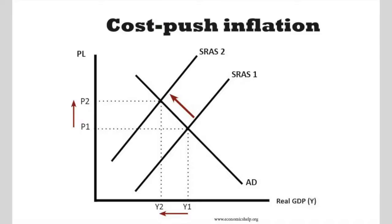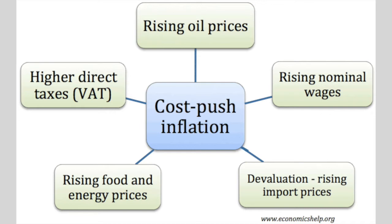The other main type of inflation is when there's an increase in the cost of production, and firms pass on these cost increases to consumers in the form of higher prices. A good example is the rise in the price of oil. Oil is a very important commodity — nearly all goods are transported using some form of oil-based energy. So when oil prices go up, it's more expensive to transport goods, so prices rise.